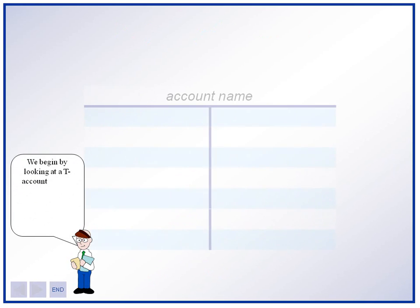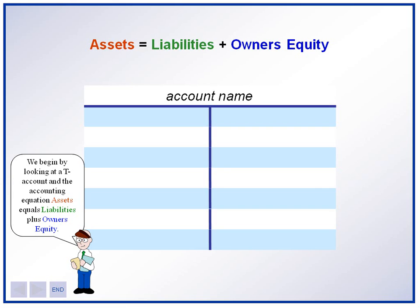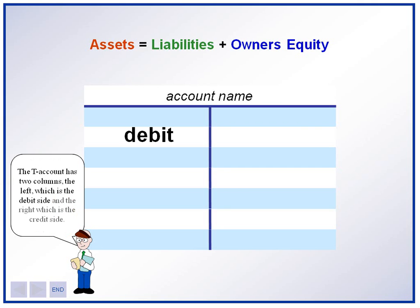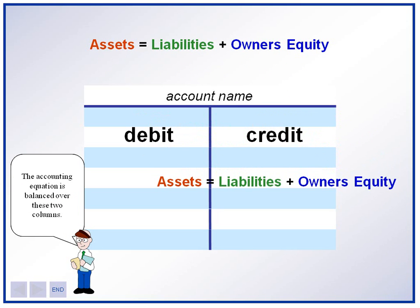In this tutorial, we're going to look at T-accounts. In accounting, T-accounts are the basic recording devices used to ensure that we have the correct transactions recorded in our general journal. Remember, the basic accounting equation is assets equals liabilities plus owner's equity. In a T-account, we have debits on the left side and credits on the right side. Debits will always be on the left and credits will always be on the right side of the T-account. Assets normally contain a normal debit balance. Liabilities and owner's equity normally have a credit balance. This will be important as you go through your accounting education.